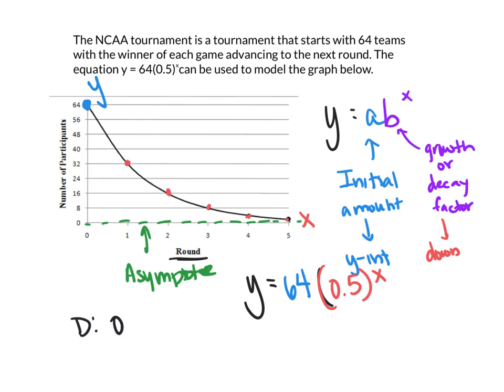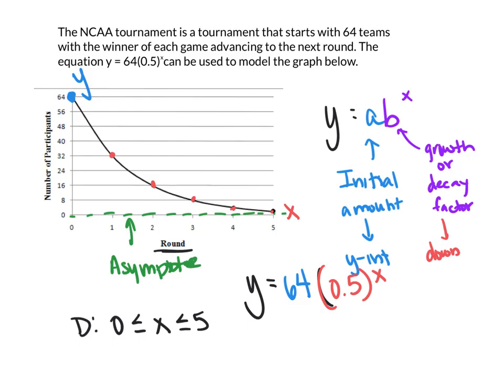So we're gonna say that you're going to start from 0, so your x is between 0 to 5. That's the domain of this function. You can't go past 5. You can only have 5 rounds because after 5 rounds all teams will be gone, and you have to start at the 0 round, which is the initial part when they first get invited to the tournament.